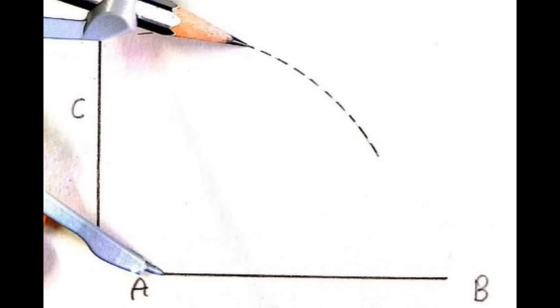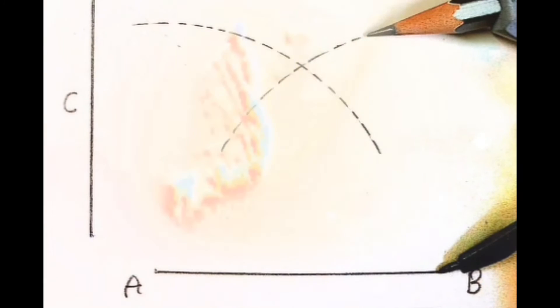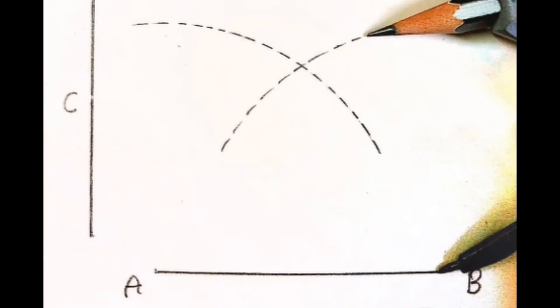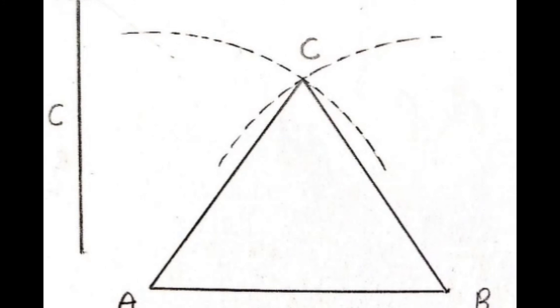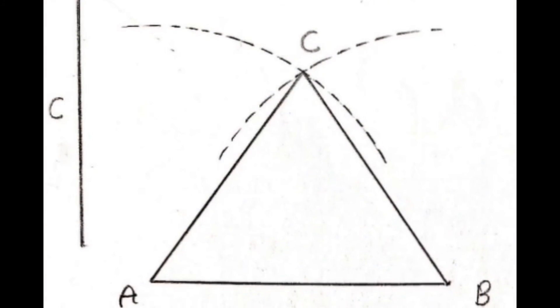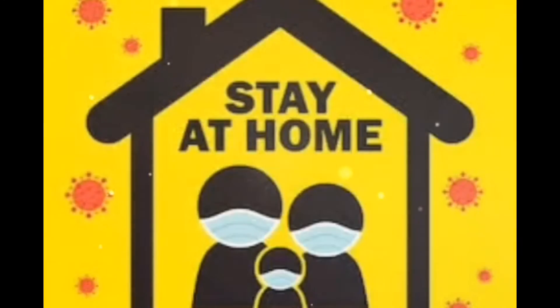The length is not mentioned so you can draw according to your choice. Now put the tip of the compass on point B — the radius should be the same, according to the CD line — and draw an arc. Where the arcs intersect is point C. Join points A to C and C to B. This is your isosceles triangle. Students, draw these on your sketchbook. Stay home, stay safe. Thank you.